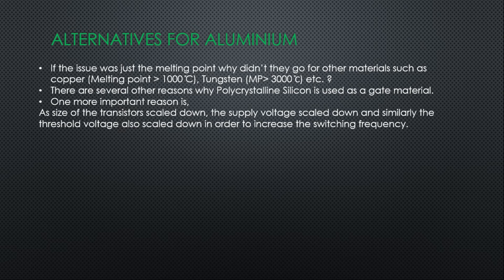So we definitely need an alternative. But if the issue was just melting point, why didn't they go for other materials such as copper or tungsten, which have melting points of thousands of degrees Celsius? The reason is that the melting point of aluminum is not the only reason they went for polysilicon. One more important reason is that as transistor sizes scale down, supply voltages scale down, and similarly the threshold voltage scales down to increase switching frequency.